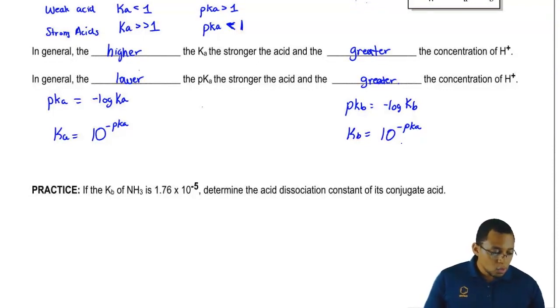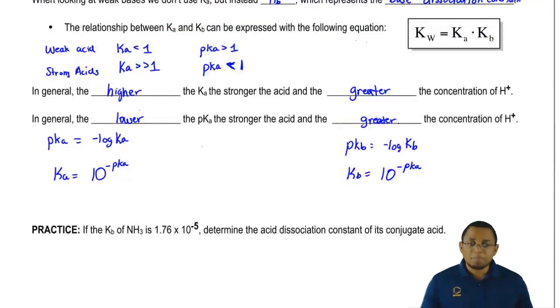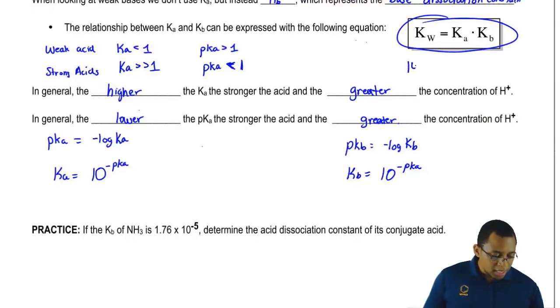And one last thing. We can say here that the relationship to pKa and pKb can be established by looking at this equation here. By taking the negative log of Kw, Ka and Kb, we say that the equation becomes 14 equals pKa plus pKb.